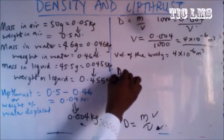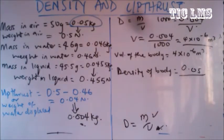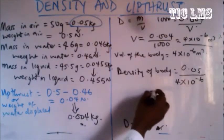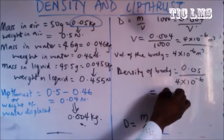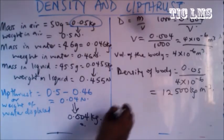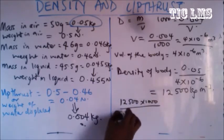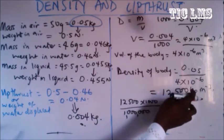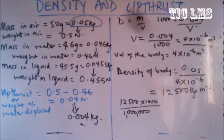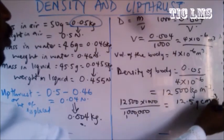Density of body is 12,500 kg/m³. Since the question parameters are in grams and cm cubed, we convert by multiplying by 1000 and dividing by 1 million, giving 12.5 gram per centimeter cubed.